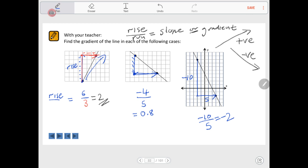Just to show these a little more clearly, for this first one we had a rise of six from here to here and a run of three. Six over three gives two. Here we have negative four and five across that way, and here negative ten over five.